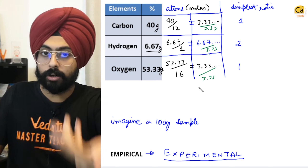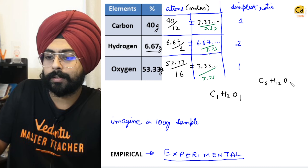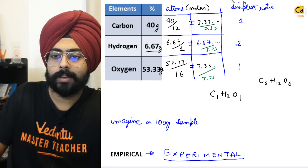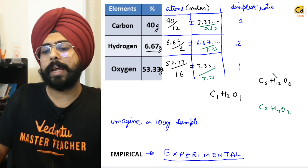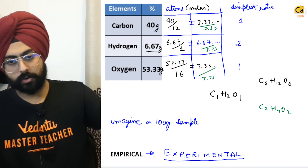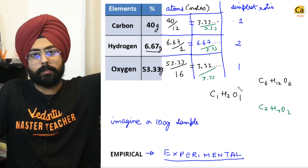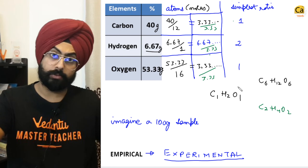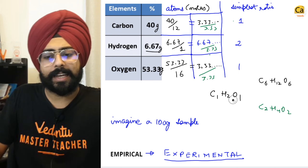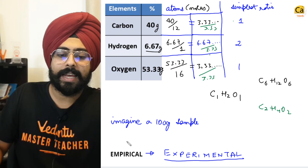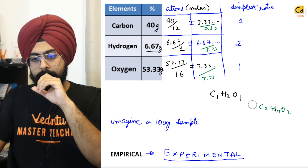The simplest ratio — divide everything by the smallest amount (3.33) — gives 1 : 2 : 1. So the empirical formula can be written as CH2O. In reality, this could be C6H12O6 or C2H4O2 — there are a bunch of different possibilities.